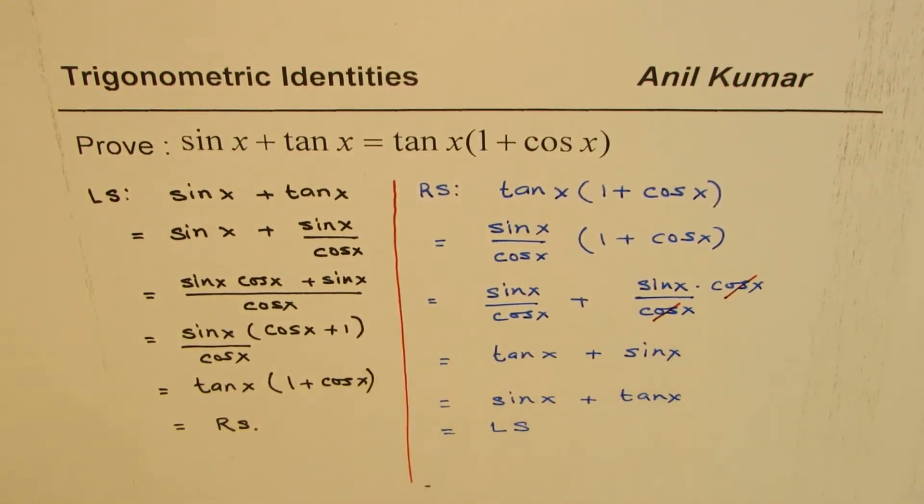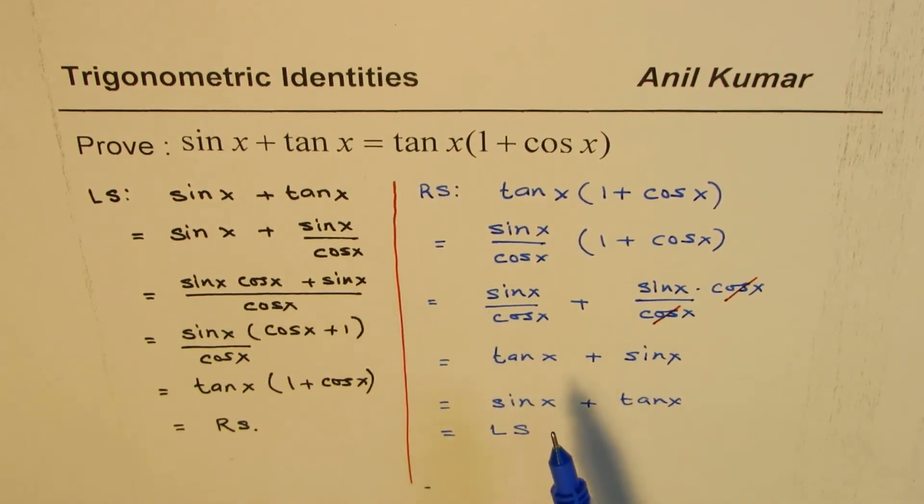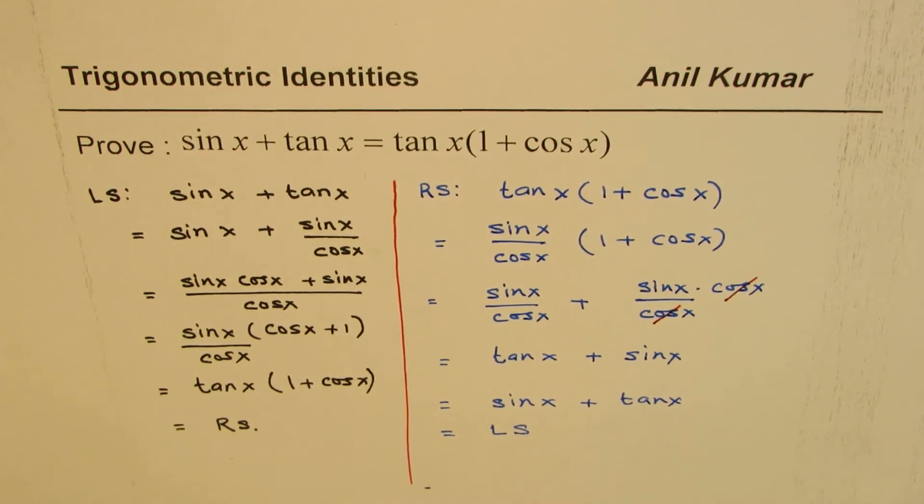So either way you could actually solve this question. Now preferred method would be starting from right side since that seems to be more straightforward. Anyway, both are correct. So I hope that helps you to understand how to prove such identities.